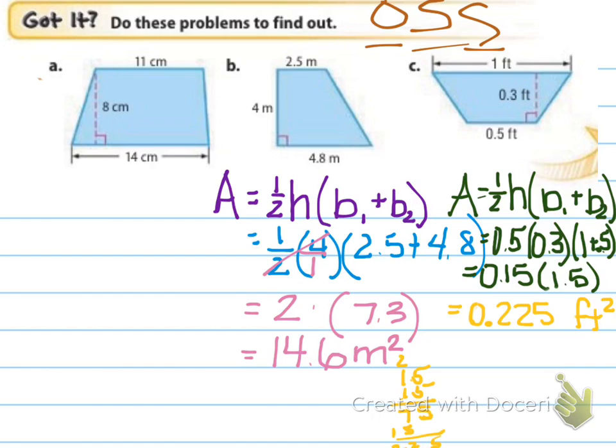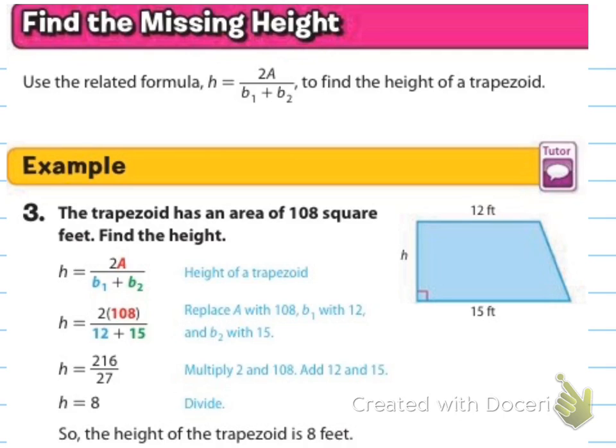And so, my answers are 14.6 meters squared for B, and 0.225 feet squared for C. And if you want to check my work and how I did it, you can just see what I've done here. Pause the video if you need to look at it.